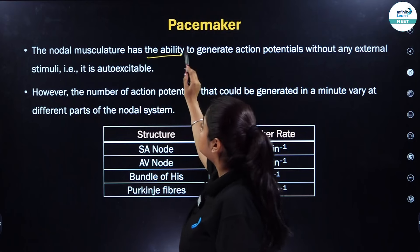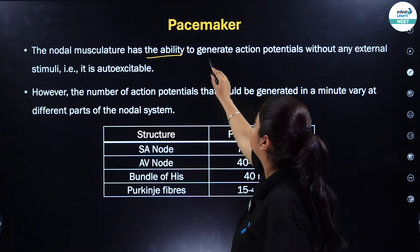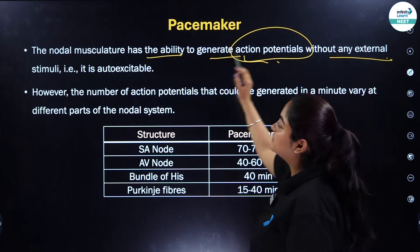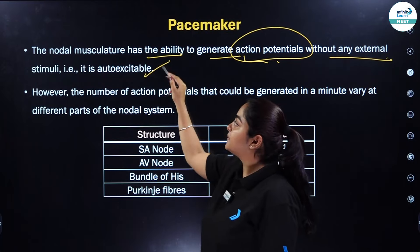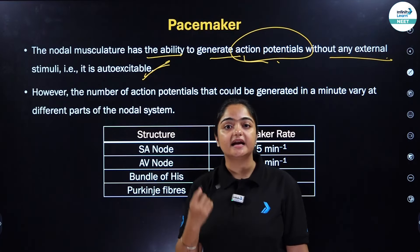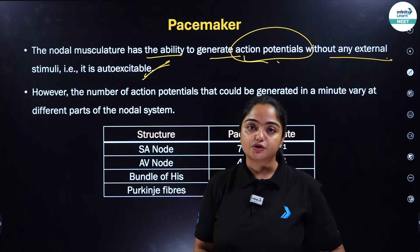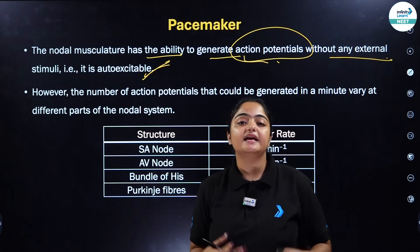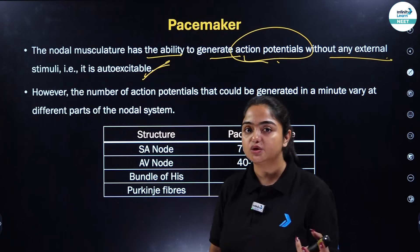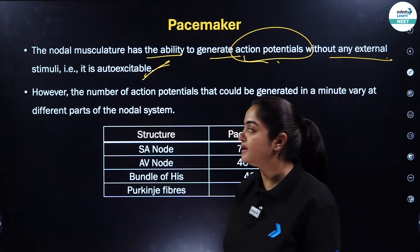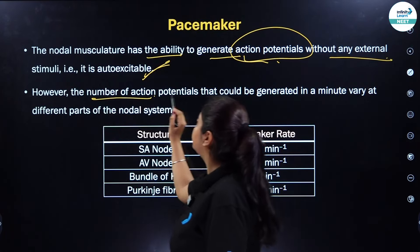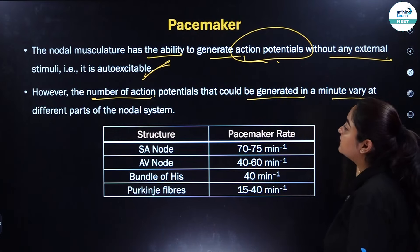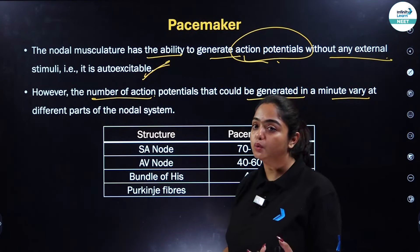The nodal musculature has the ability to generate action potentials without any external stimuli — hence we call it auto-excitable. All the involuntary actions of the cardiac activity that occur on their own are your auto-excitable activities. The number of action potentials that can be generated per minute varies in different parts of the nodal system.